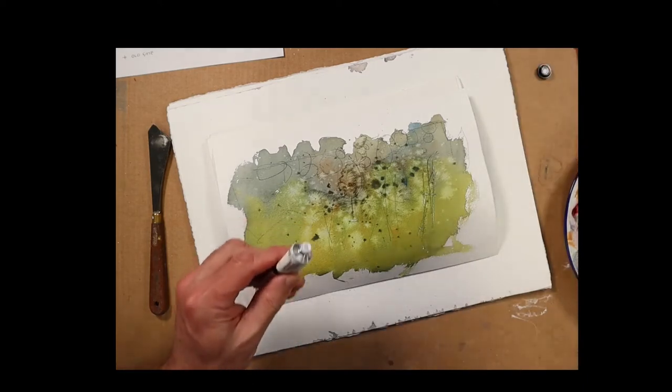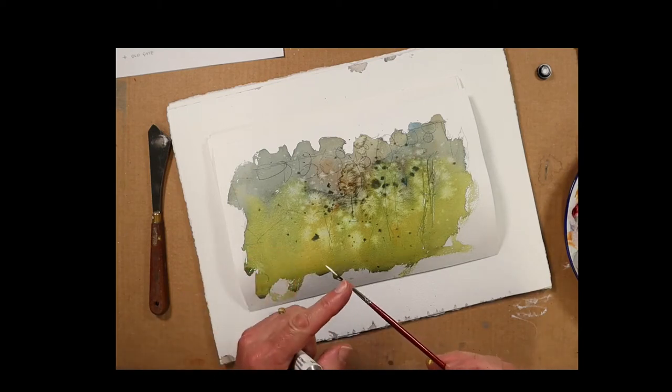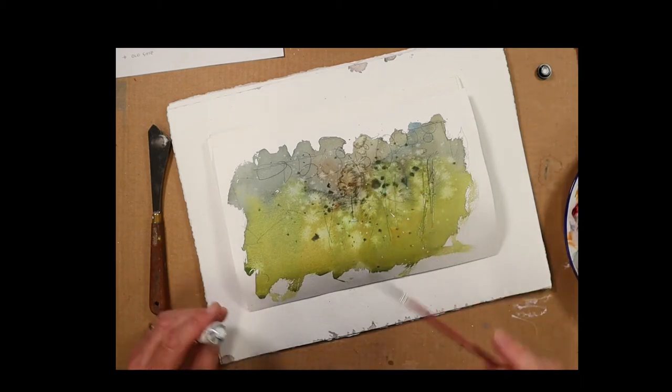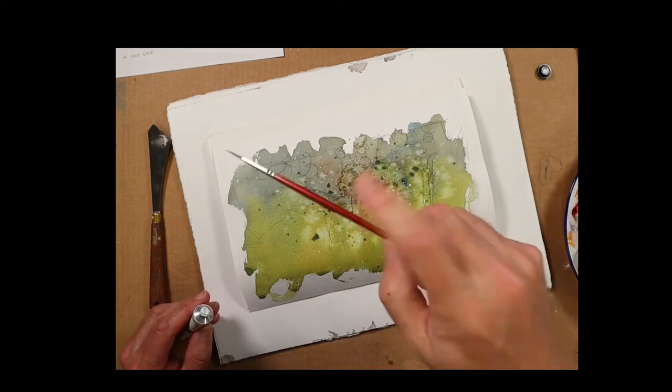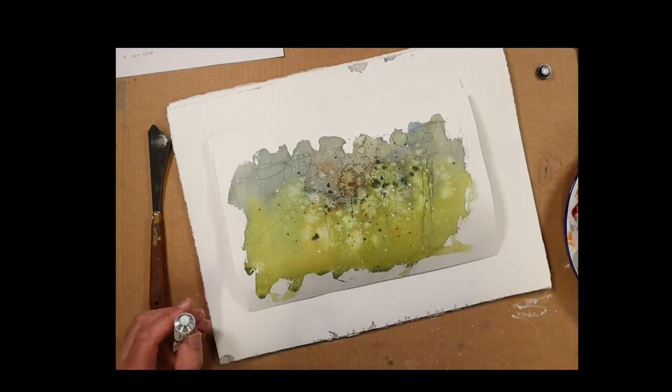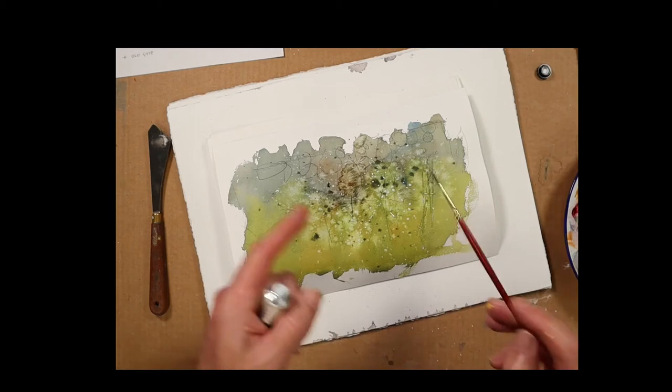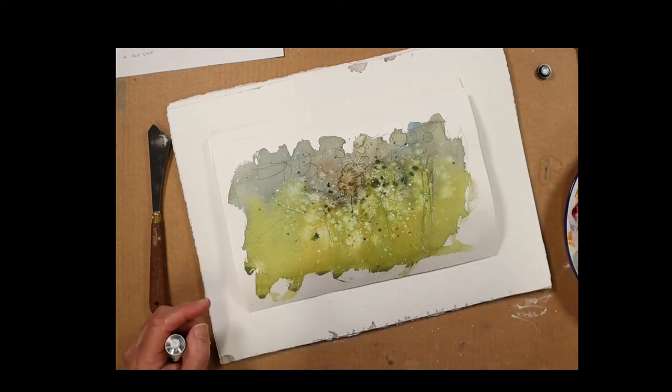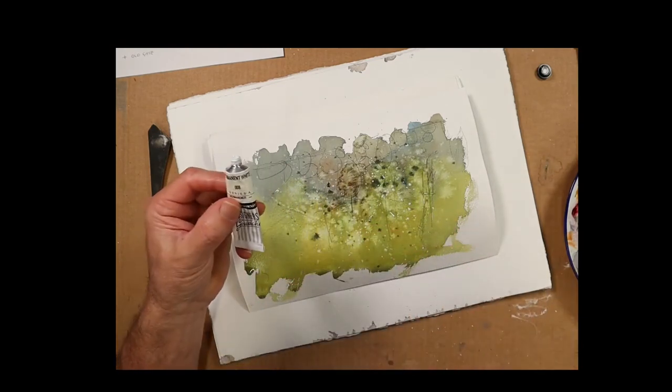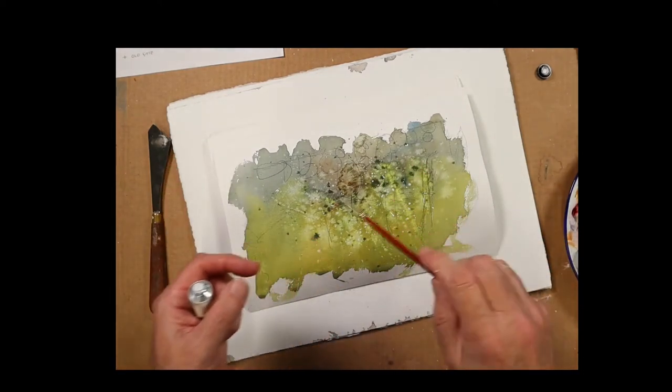Something else we can do is use white gouache. I'm taking white gouache directly from the tube—there is water in this brush—and again tapping just a bit of white paint into areas like this. It's a great effect, really lovely. Sometimes I'll put a bit of color in that gouache as well, say a bit of lemon yellow.